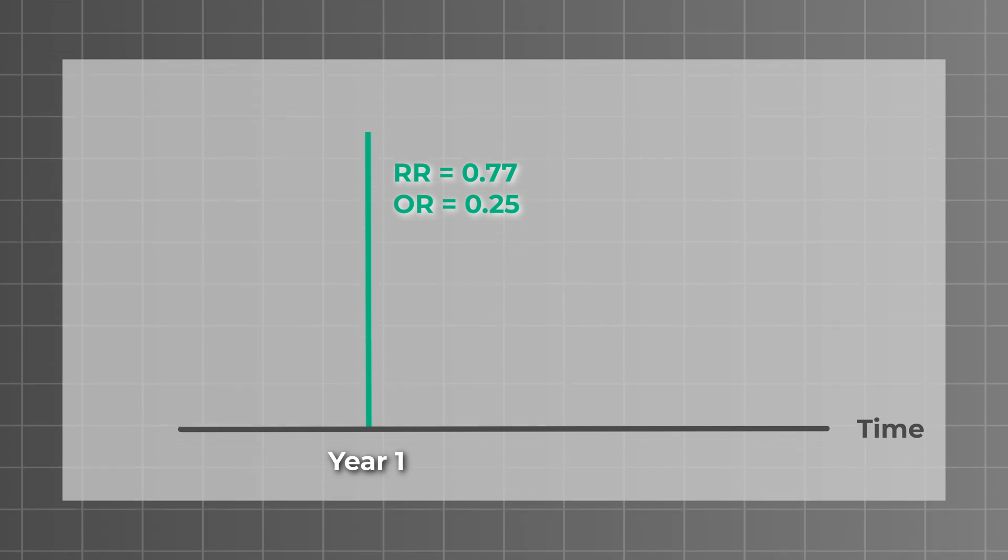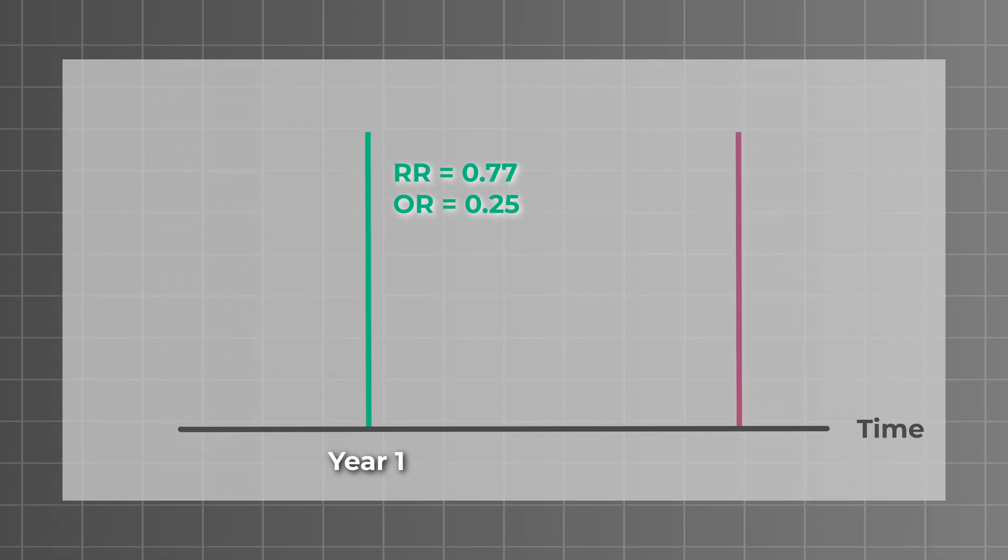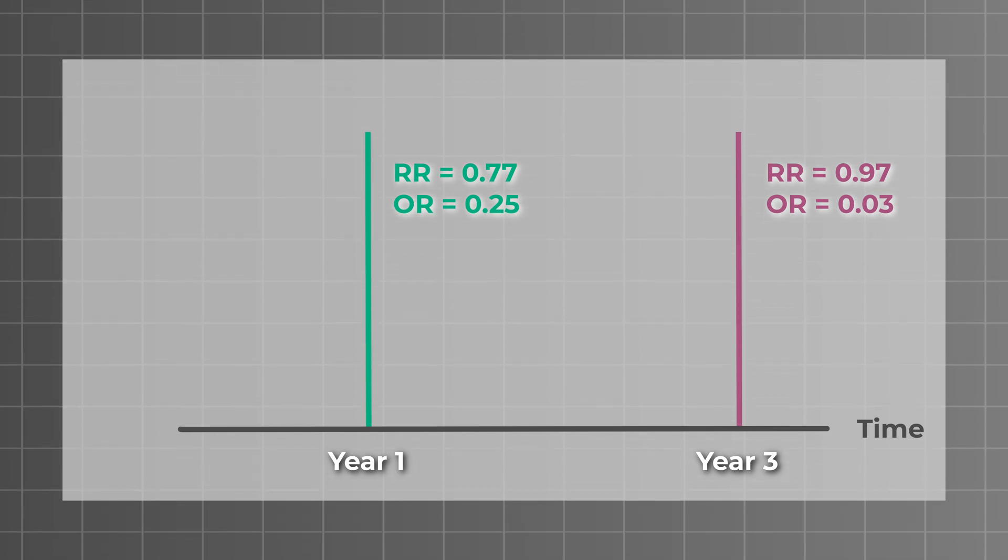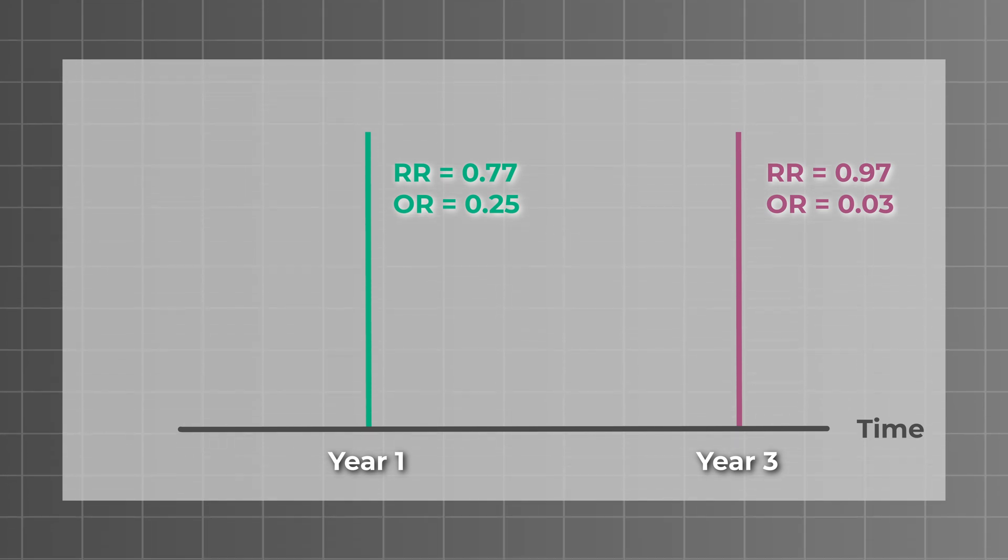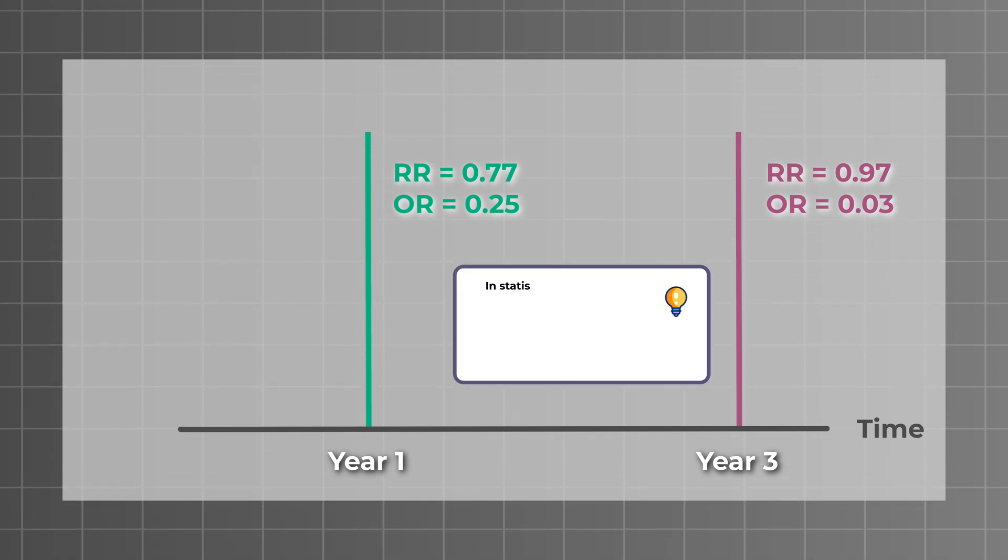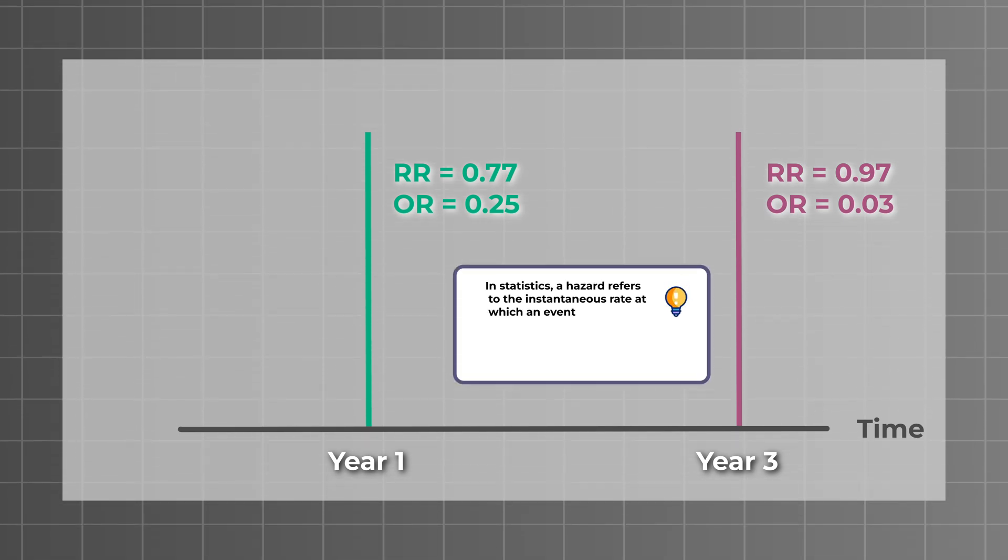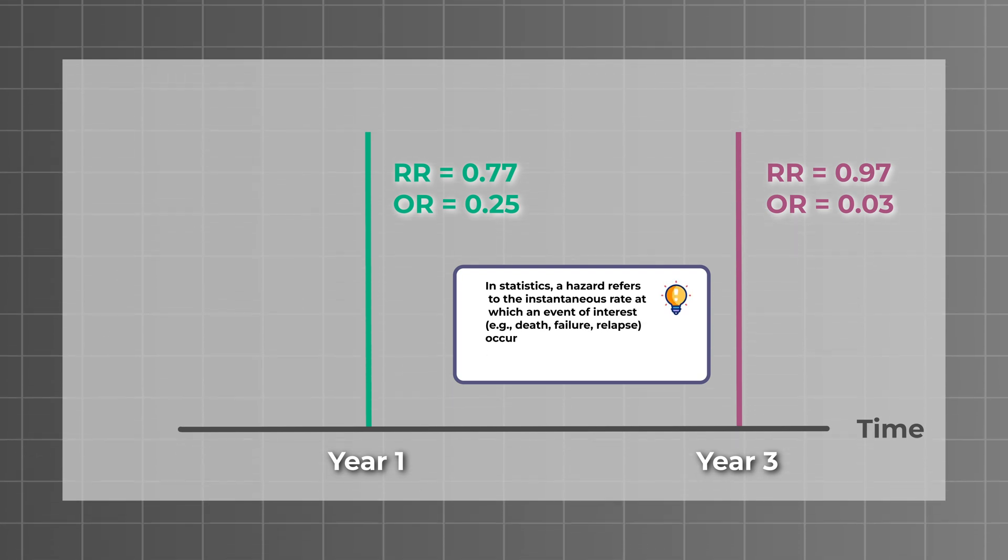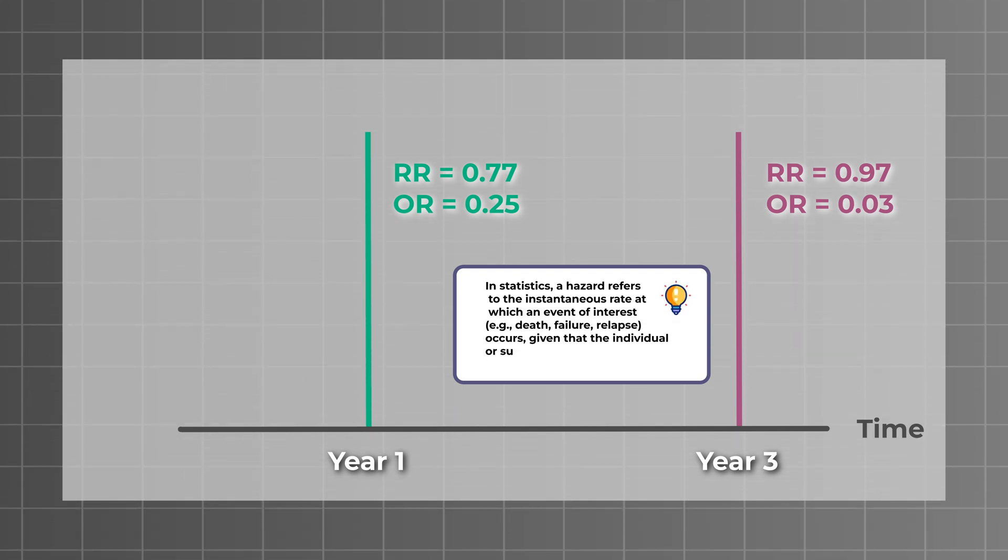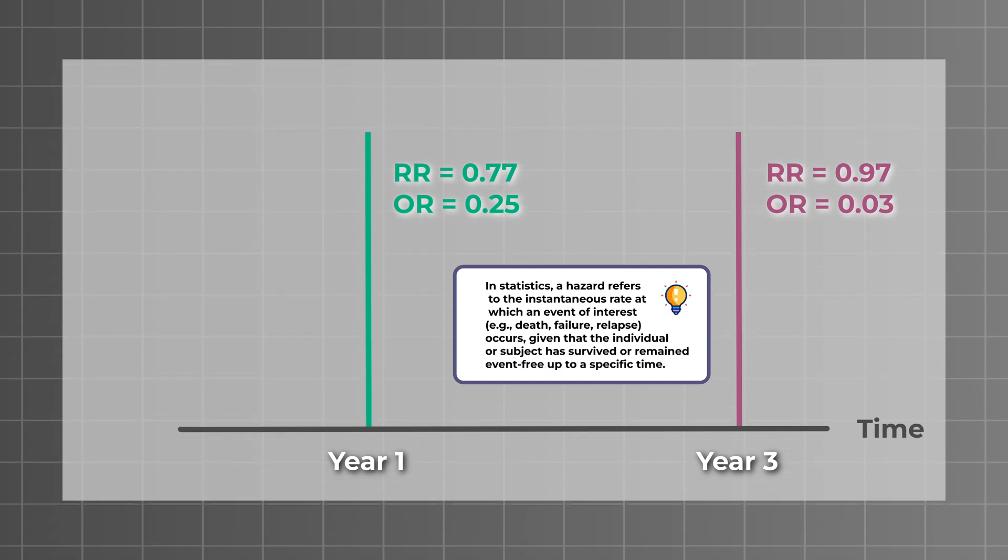However, what if we had decided to assess the effectiveness of a new drug after three years instead? In this case, we might obtain a different risk and odds ratio, and therefore our conclusions could be different. Hazard ratios address exactly this issue. Rather than comparing the risk or odds in the exposure and control group at a particular point in time, hazard ratios compare the hazard, which is the instantaneous rate of an event occurring.